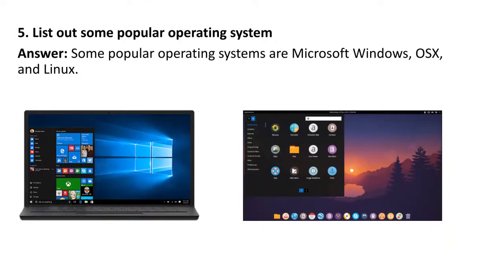Next question: list out some popular operating systems. Some popular operating systems are Microsoft Windows, OS X, and Linux. Here you can see an image showing a system running Windows operating system and the second one running Linux operating system.